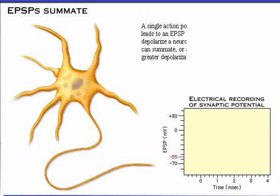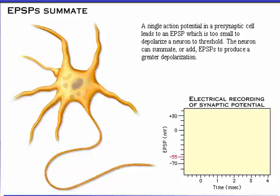A single action potential in a presynaptic cell leads to an excitatory postsynaptic potential which is too small to depolarize a neuron to threshold. The neuron can summate or add excitatory postsynaptic potentials to produce a greater depolarization.